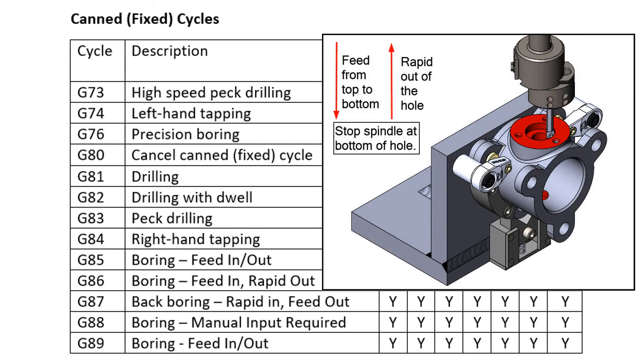The G86 will feed the tool from the programmed R level to the Z level at which point the spindle will stop while the tool rapids out of the hole. This is considered a rough boring operation as it tends to leave a spiral scratch on the bore.